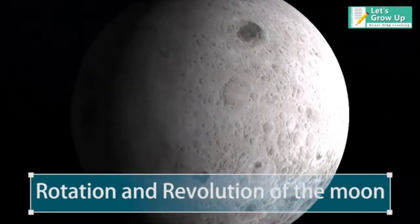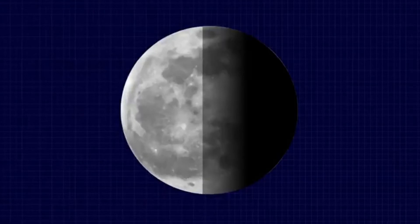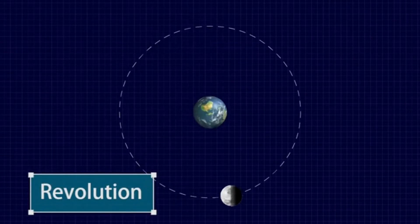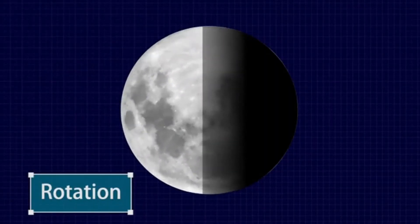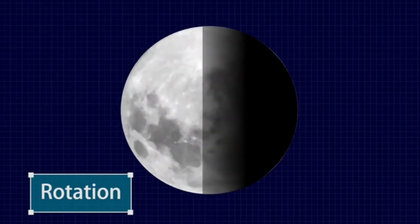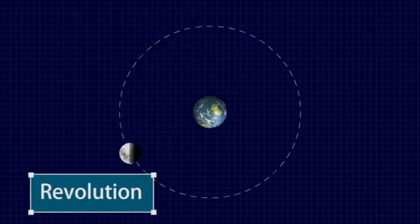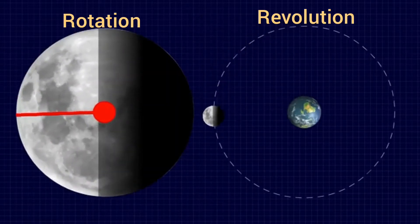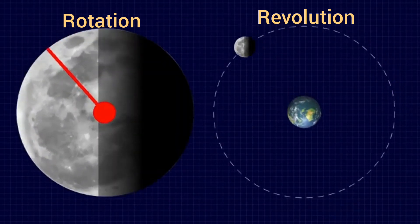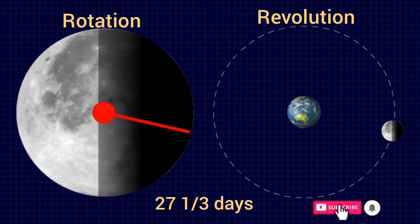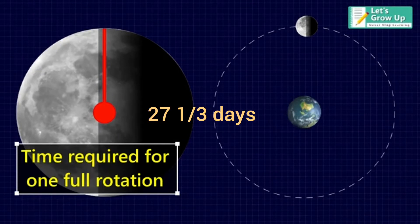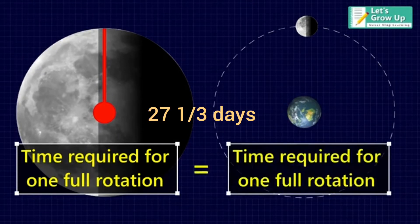The moon rotates on its axis, and at the same time, the moon revolves around the earth. Do you know how many days does the moon take to complete one rotation? And do you know how many days the moon takes to complete one revolution around the earth? The duration of rotation and revolution of the moon is the same. It takes 27 and one-third days to rotate on its axis, and it also takes 27 and one-third days to revolve around the earth.